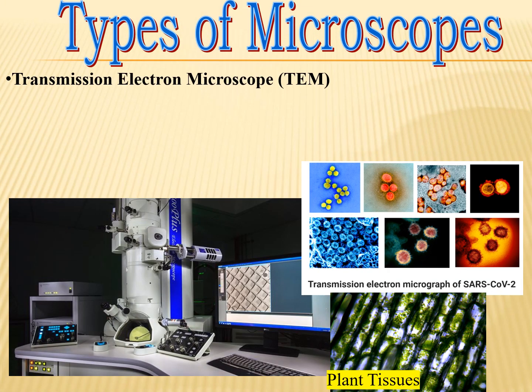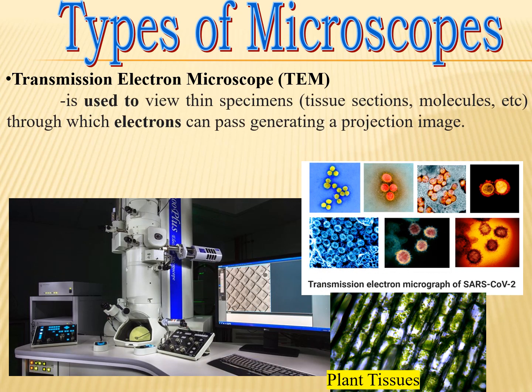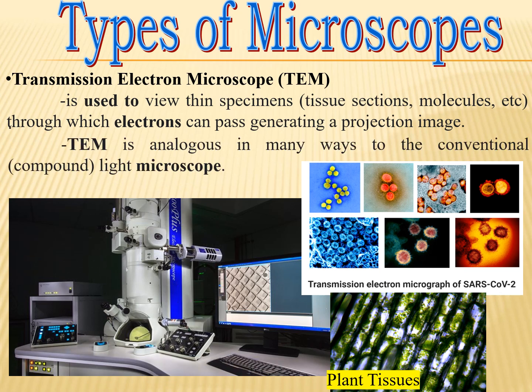Another type is the transmission electron microscope, or TEM. TEM is used to view thin specimens like tissue sections, molecules, etc., through which electrons can pass, generating a projection image. TEM is analogous in many ways to the conventional compound light microscope.